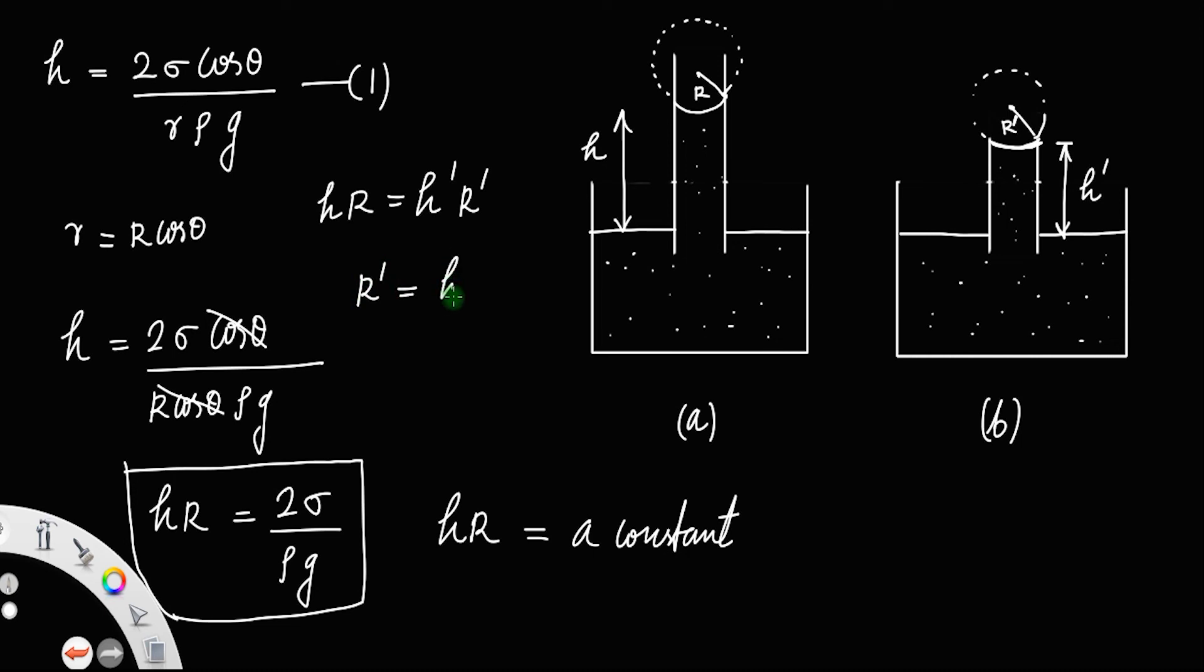So r' equals hr divided by h', which means the liquid does not overflow but changes the curvature. The liquid does not overflow from this capillary tube.